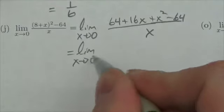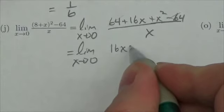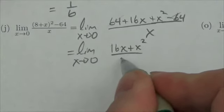So now this is the limit as x approaches 0 of, well the 64's are going to cancel, and so you're left with 16x plus x squared all over x.